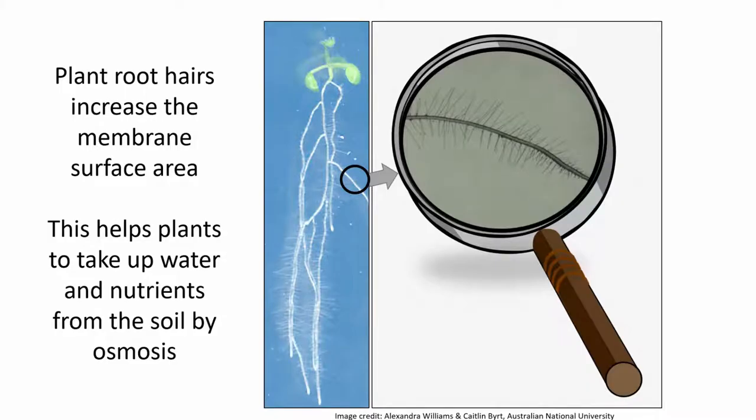The root cells of plants also take up water by osmosis. The membranes of the outer layers of root cells are like a semi-permeable barrier that allows water molecules to pass through. Usually, the concentration of solutes inside the root cells is higher than on the outside, so water moves into the cells.